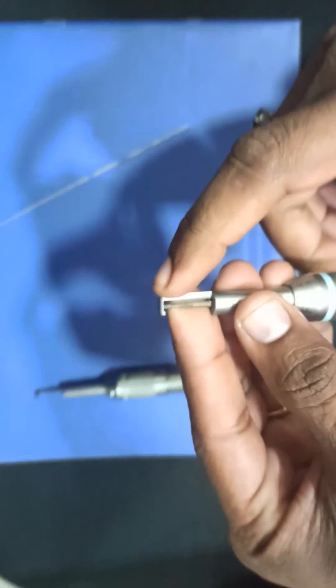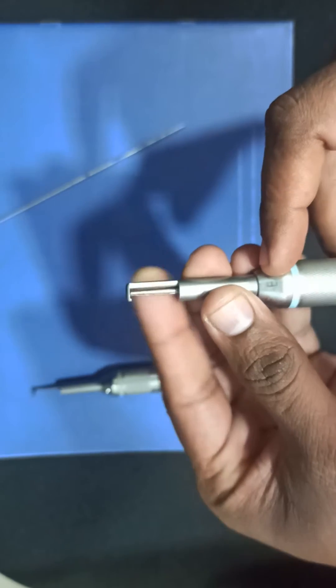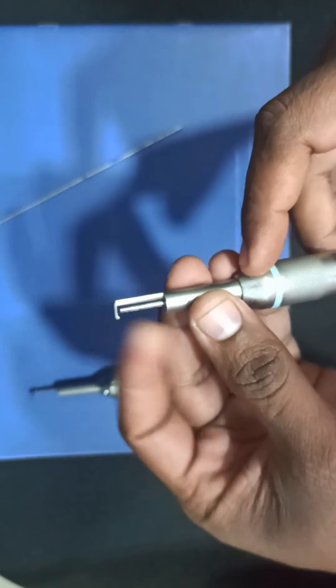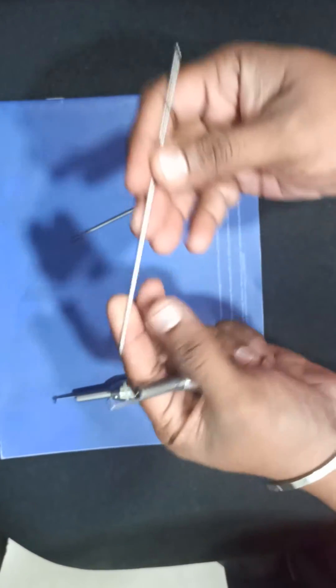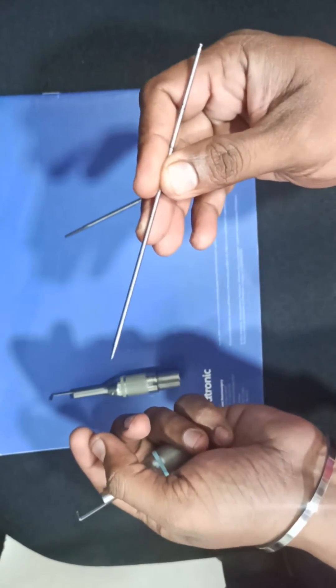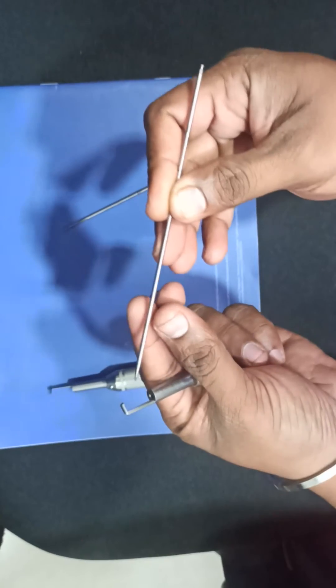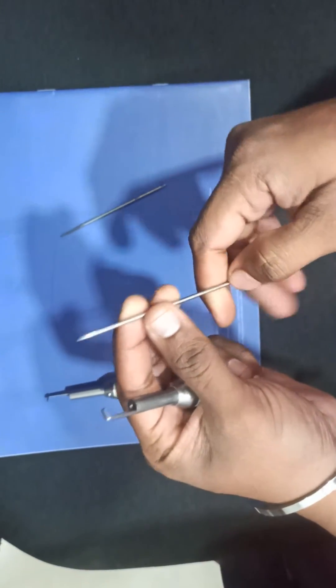Sometimes, for example, if you have a defective tool, how will you find it? For that, what you have to do is take one 10 or 15 centimeter tool. This is a 15 centimeter tool, or you can take any 10 or 12 centimeter tool.